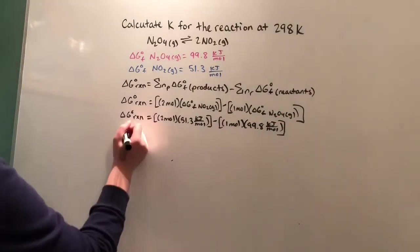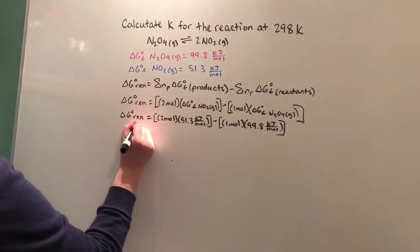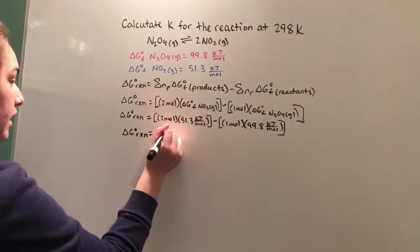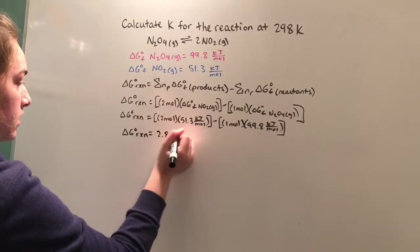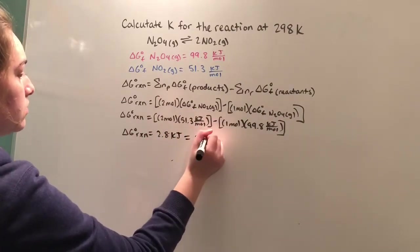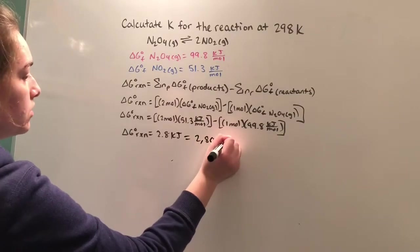Plugging this into our calculator, we get the ΔG of reaction equals 2.8 kilojoules, which also equals 2,800 joules.